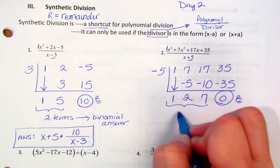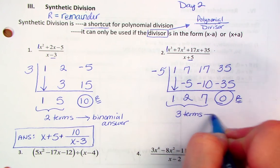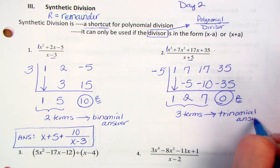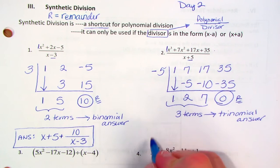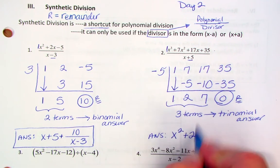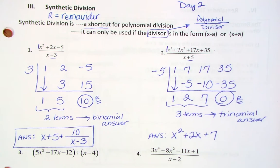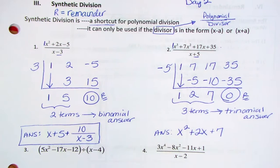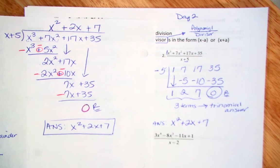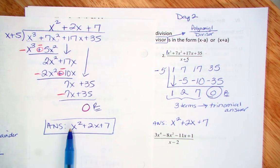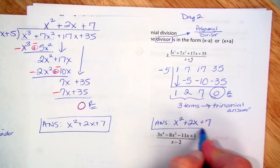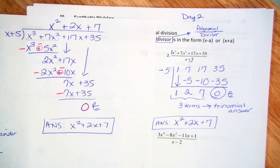We have three terms here, so that means we're going to have a trinomial answer. This is going to be x squared — so 1x squared, or just x squared — plus 2x plus 7. Comparing the two methods: this was the long division for the same problem versus the synthetic. So much quicker and much shorter, and we have the same answer.